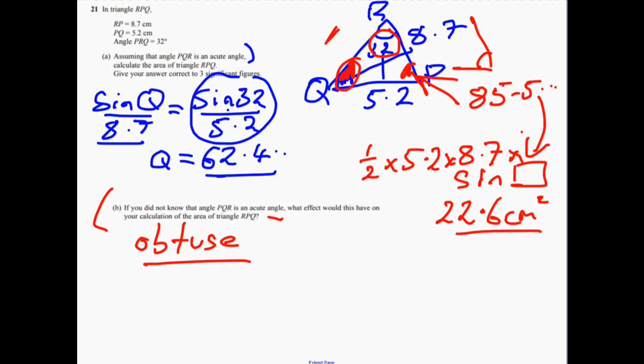Because, therefore, angle P, this other angle, would be a lot smaller. So therefore, if the angle was obtuse, it would reduce the area. It would have an effect of reducing the area. And there are two possible answers.